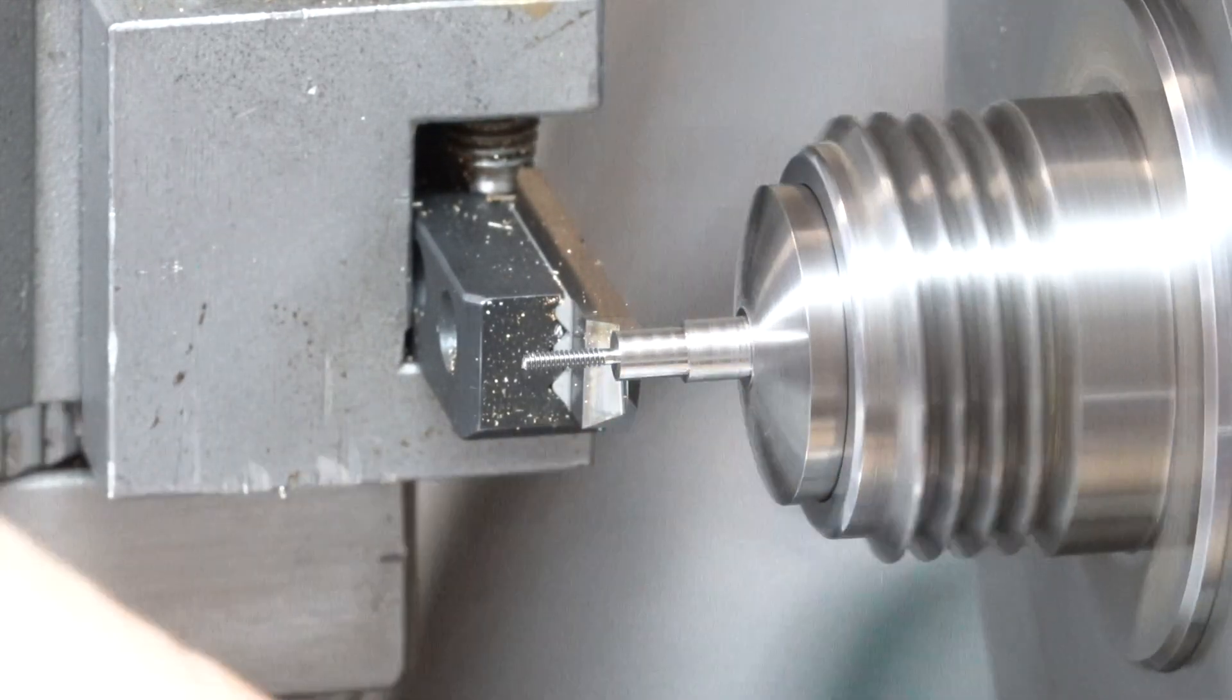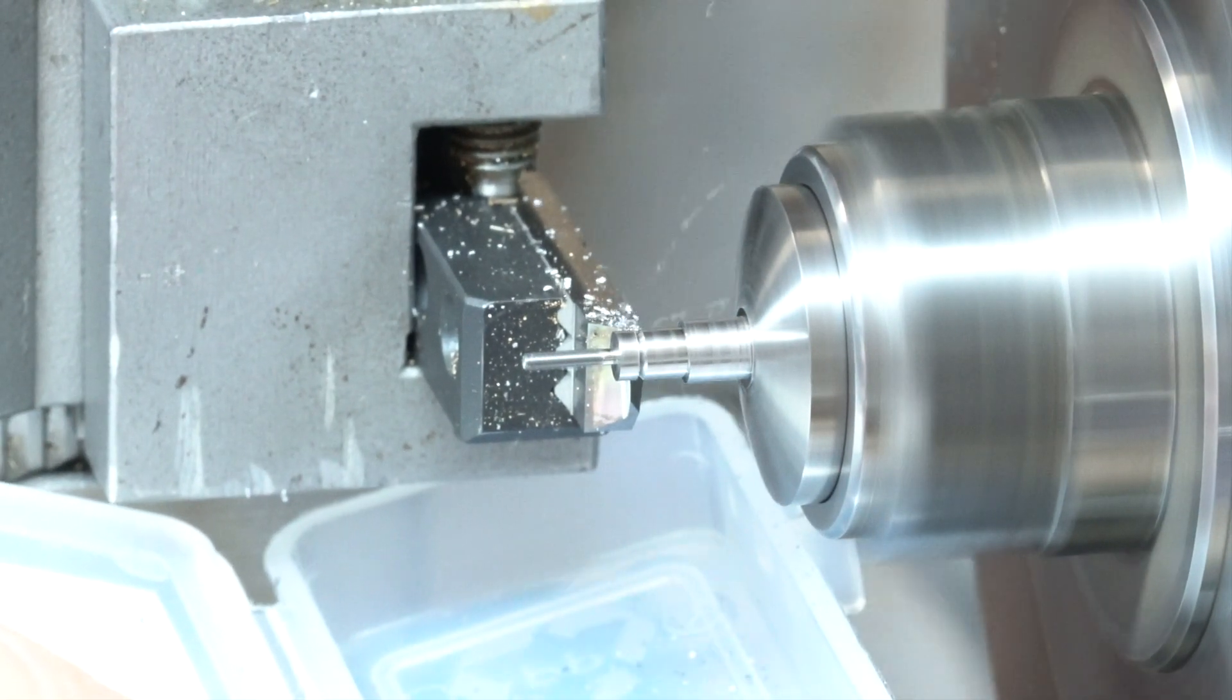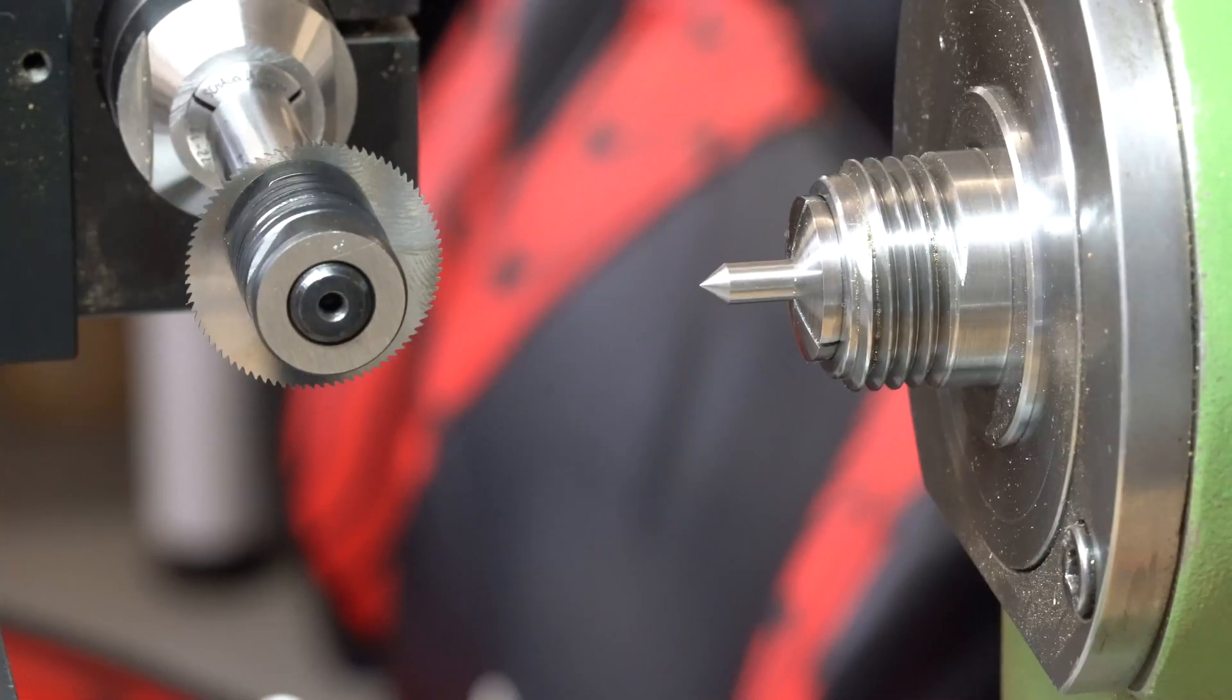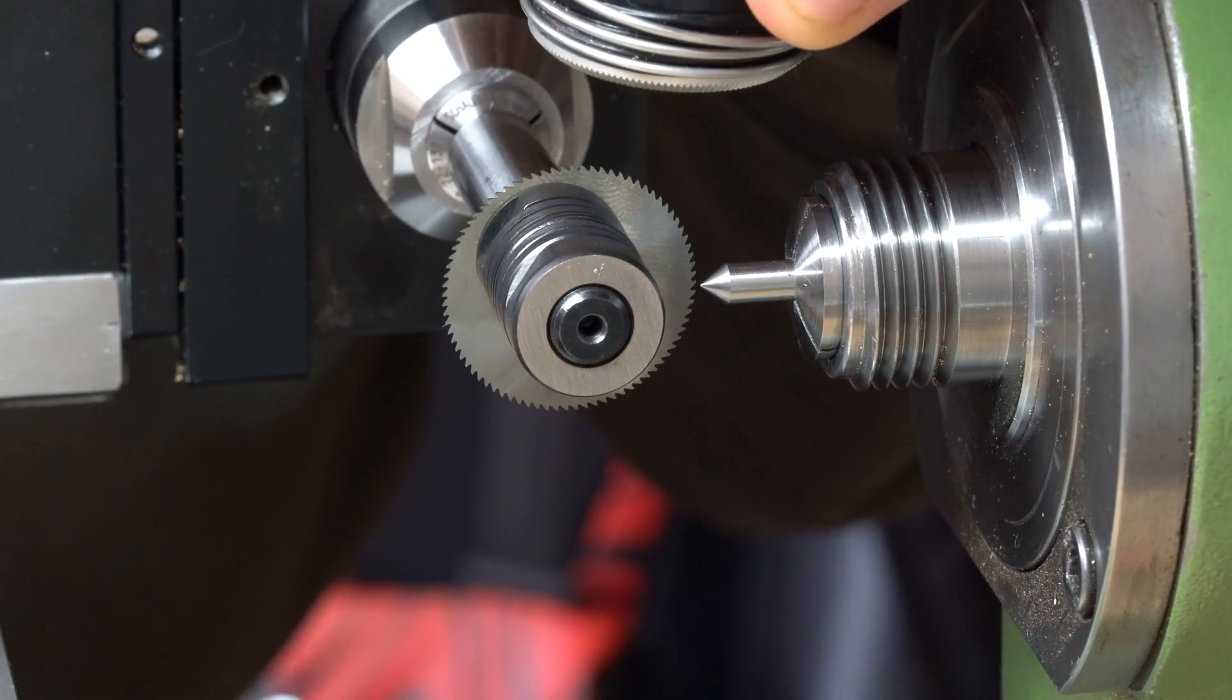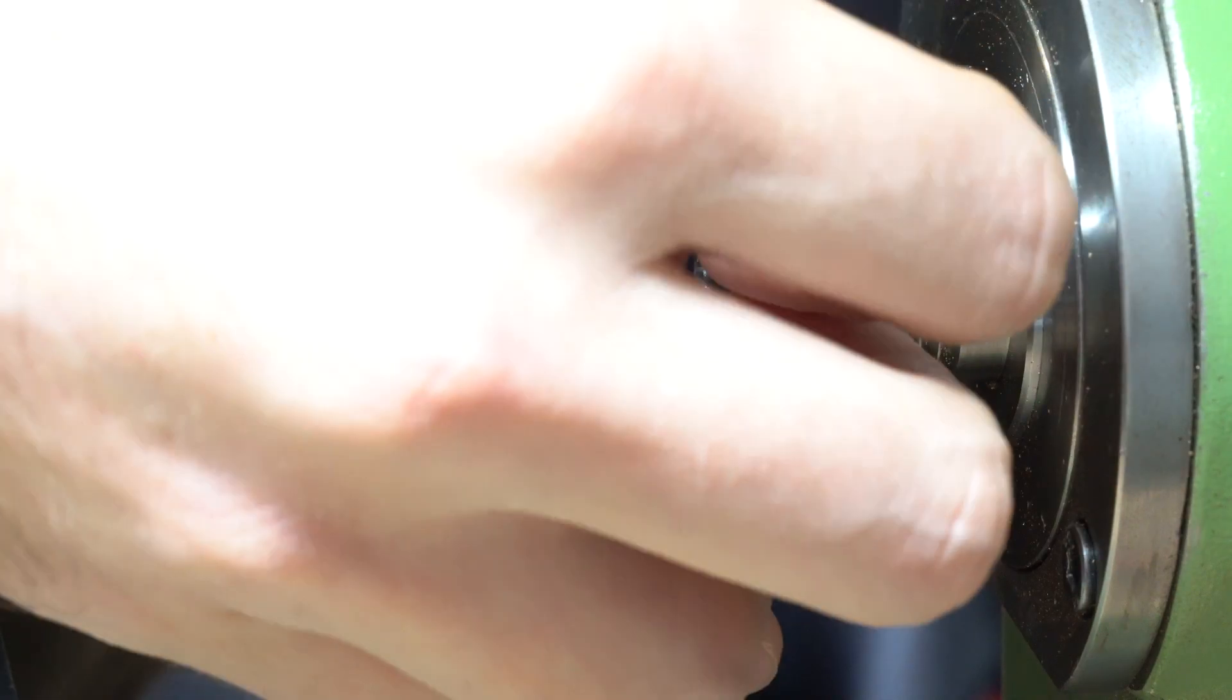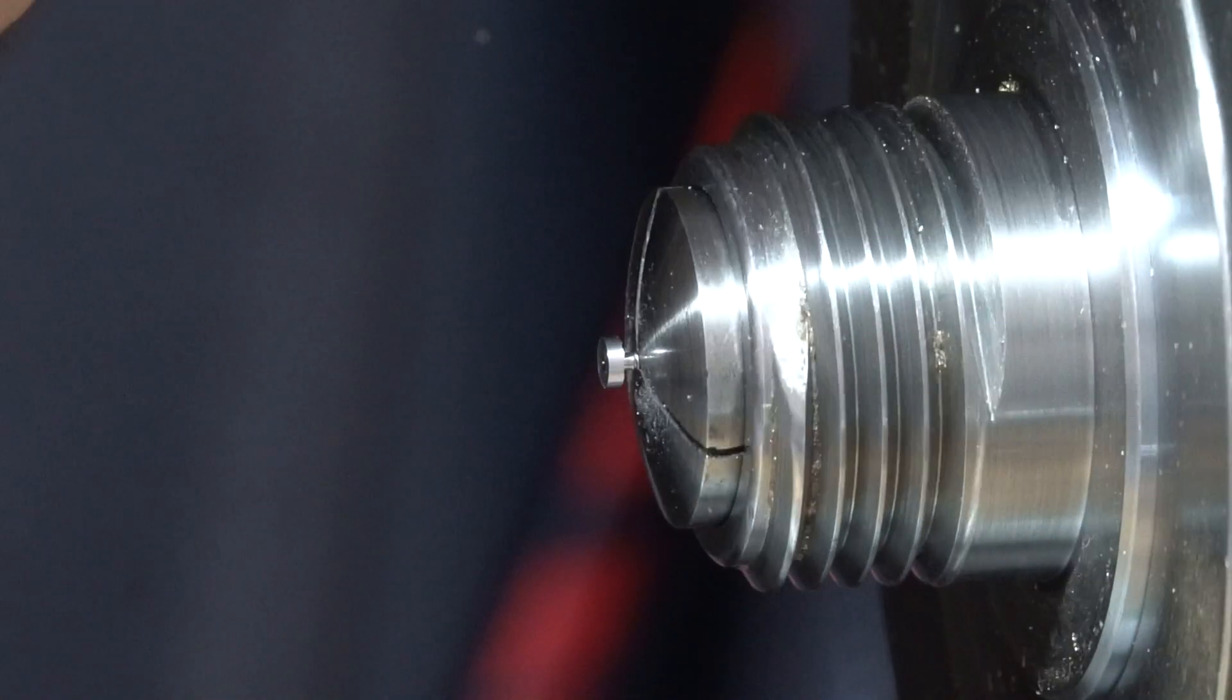Next step is to part off to the final length. Don't forget to catch it! Now it's time to cut the slot. Here you can see me centering up the blade on the centre of the spindle. Be as accurate as you can here because that will really affect the width of the slot.